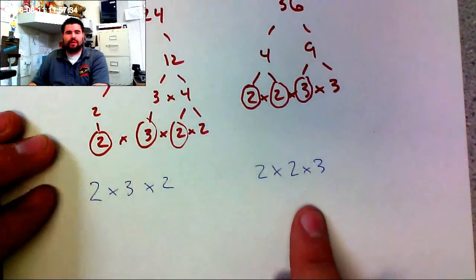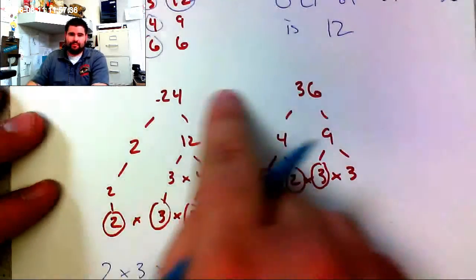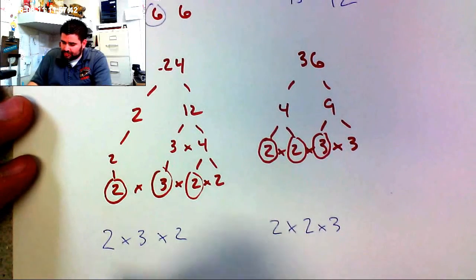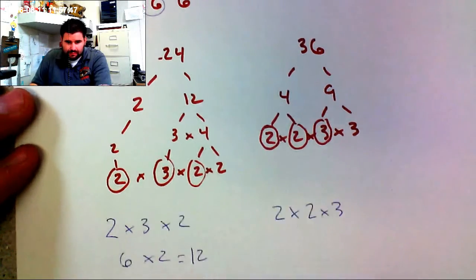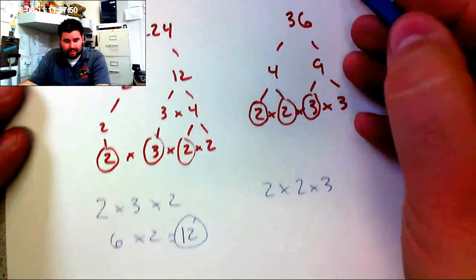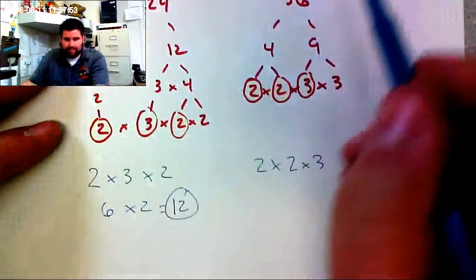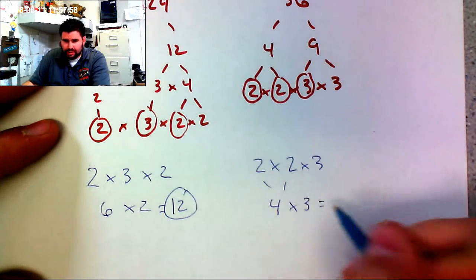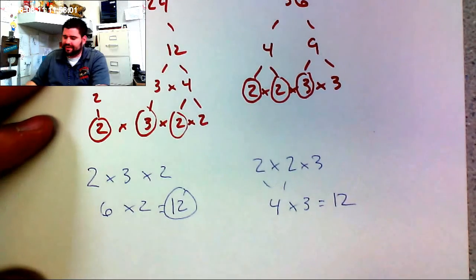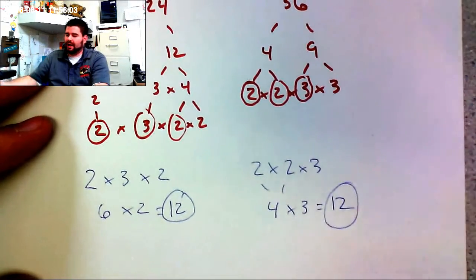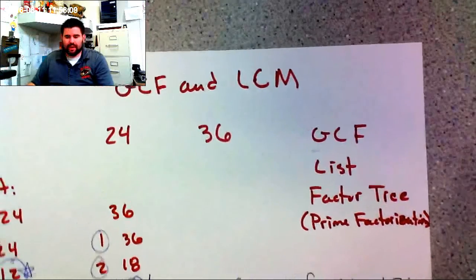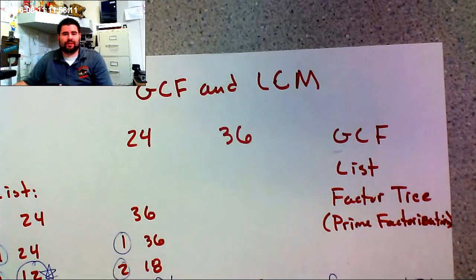If we didn't get 12, that would tell us we made a mistake in our factorization and need to go back and check. Confirming from the 36 side: 2×2=4, and 4×3=12 as well. Both sides match up at 12, confirming that's our GCF.